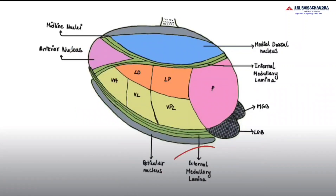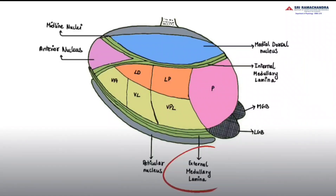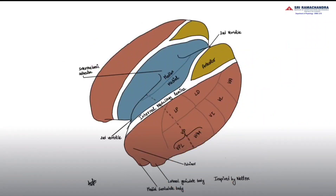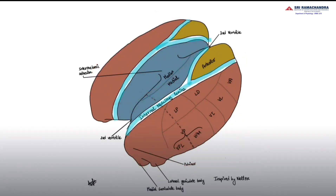Thalamocortical and corticothalamic fibers form the external medullary lamina. It covers the lateral surface of the thalamus and passes between the reticular nucleus and the rest of the thalamus. Thalamic nuclei are of three types — anterior, medial, and lateral — separated by a Y-shaped internal medullary lamina.